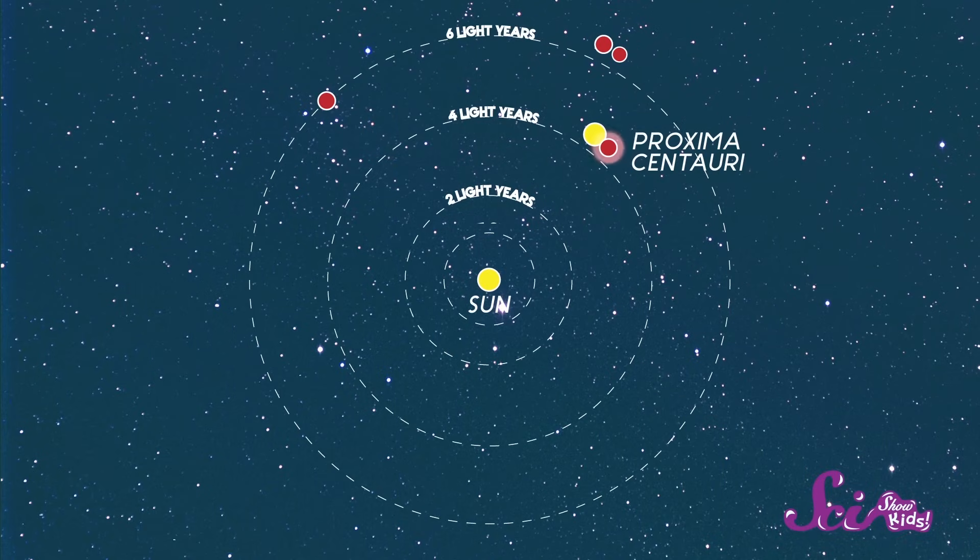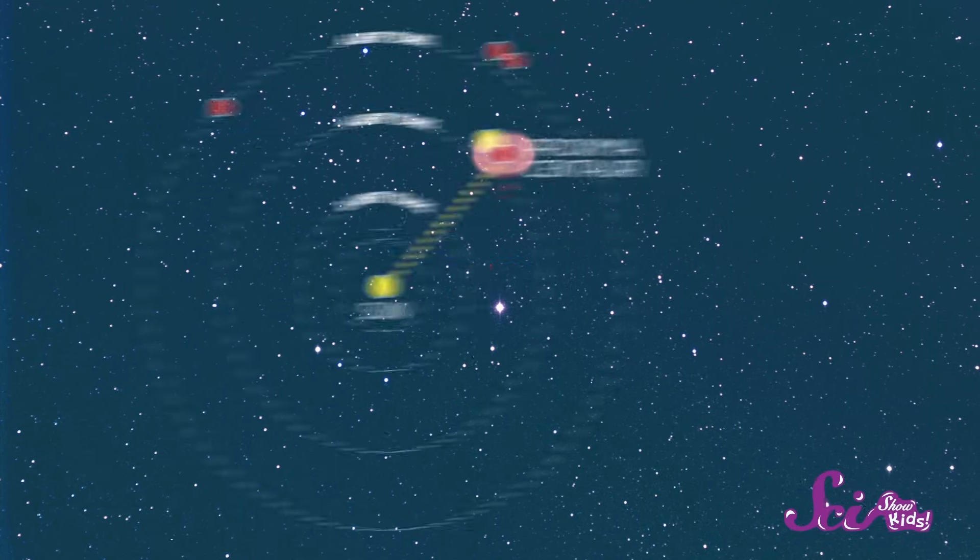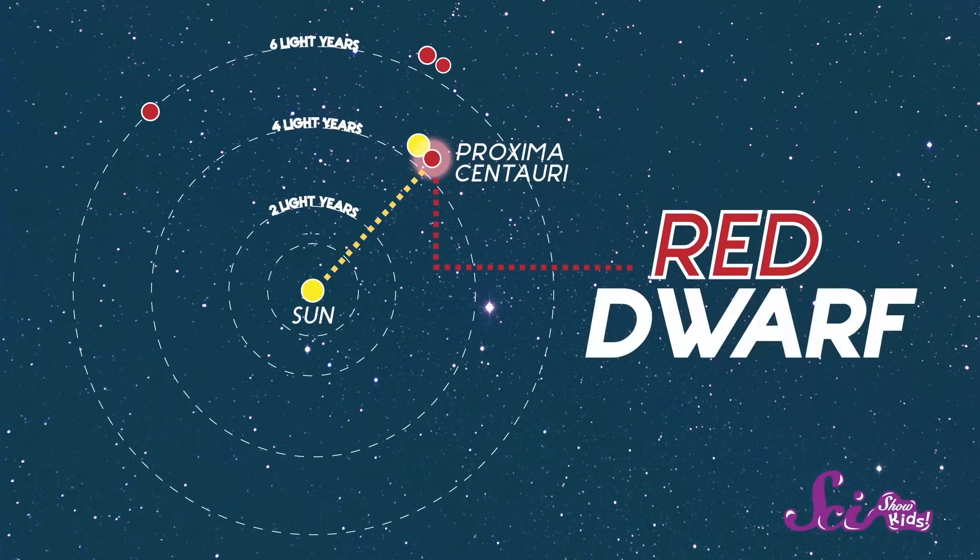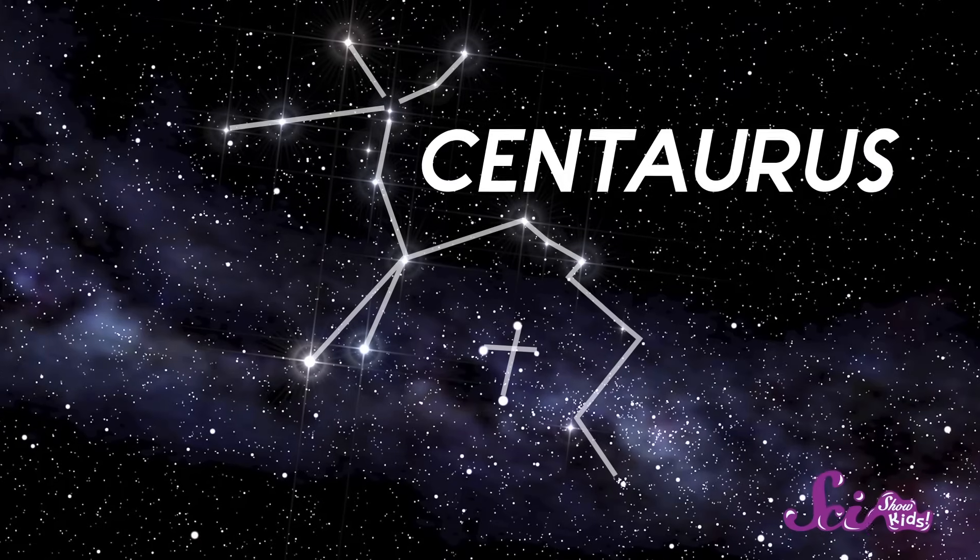A good example of this kind of star is right next door, at least in terms of space. Proxima Centauri is the nearest star to our Sun, and it's a kind called a red dwarf. It's in the constellation Centaurus in the southern sky, but even though it's closer to the Sun than any other star, it's so small that you can't even see it from Earth without a telescope.